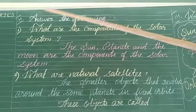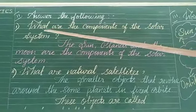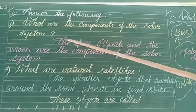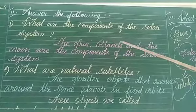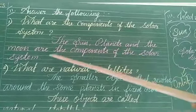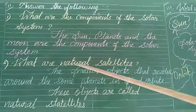We will now answer the following questions from this lesson. What are the components of the solar system? The Sun, Planets, and the Moon are the components of the solar system. What are natural satellites?